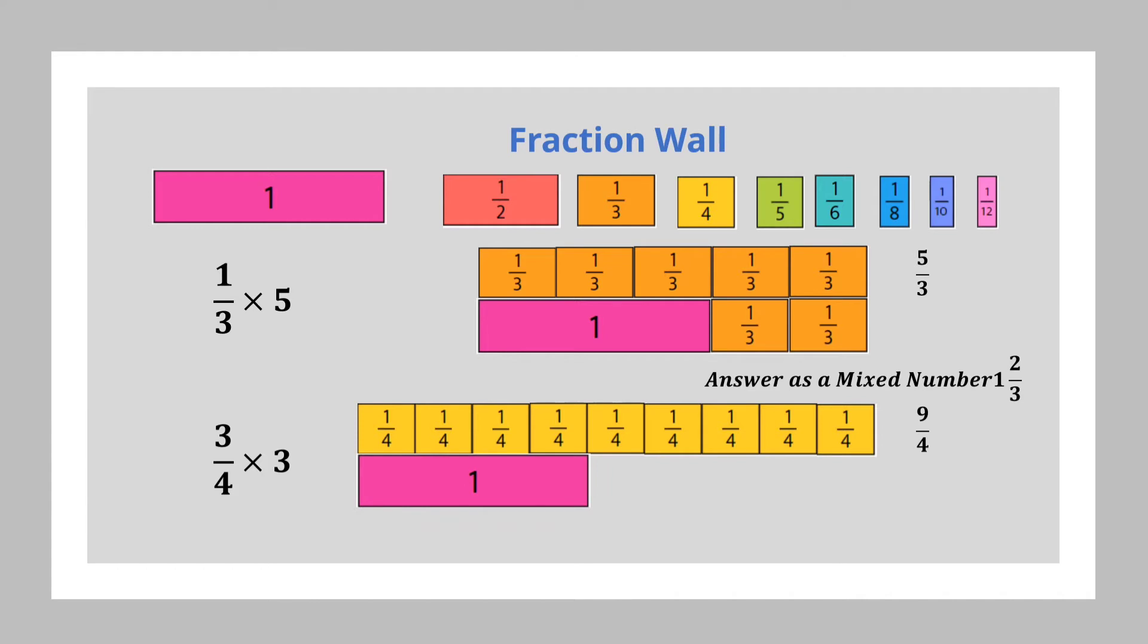If we were to align the whole to the nine quarters, we will have this. Two wholes will be perfectly aligned in the nine quarters. But if you look carefully, there is a space that is missing, and that space is occupied by a quarter tile like this. So that we can see nine quarters is equivalent to two wholes and a quarter, that is two and a quarter.